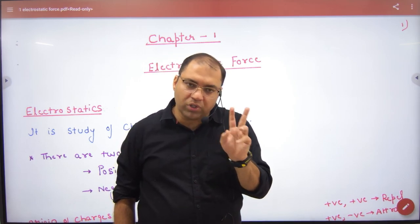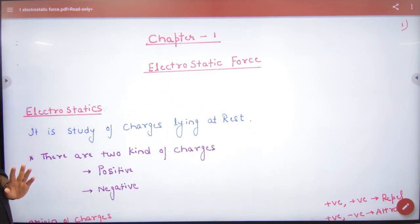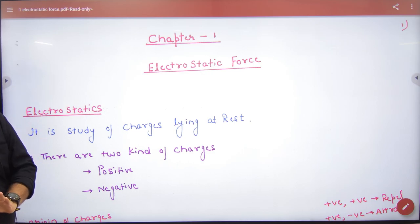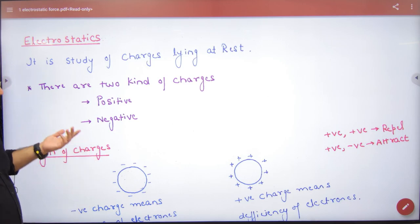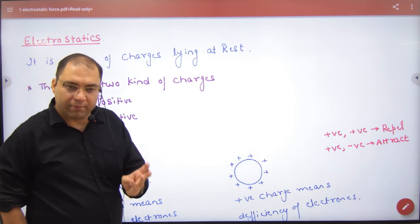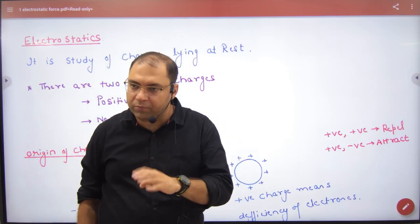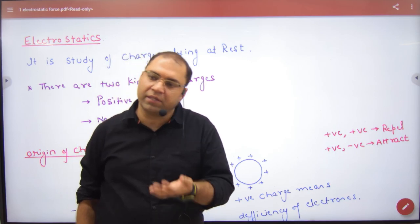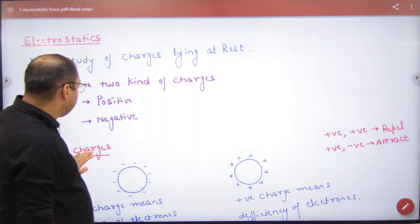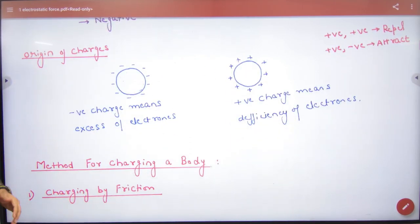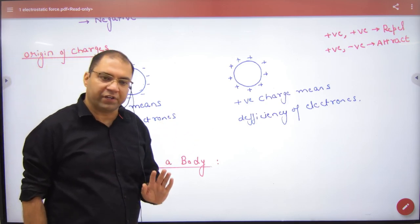There are two types of charges: positive and negative. A body has a positive charge when it is deficient in electrons. If there are excess electrons, then it has a negative charge. So positive charge means deficiency of electrons, and negative charge means excess of electrons.